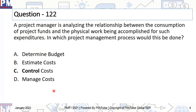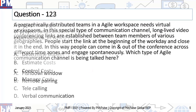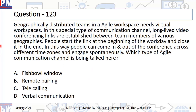The correct answer is control cost. When you're actually trying to compare the cost you were supposed to spend versus what you have actually spent, that is done in the process called control cost, where you compare plan versus actuals and then do forecasting and a lot of other things.